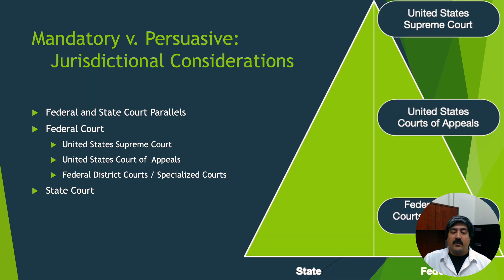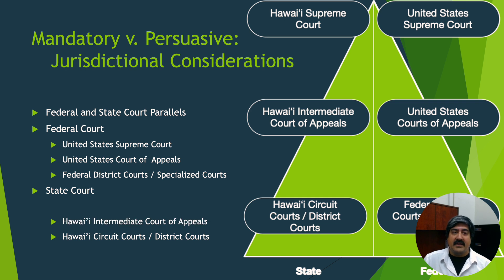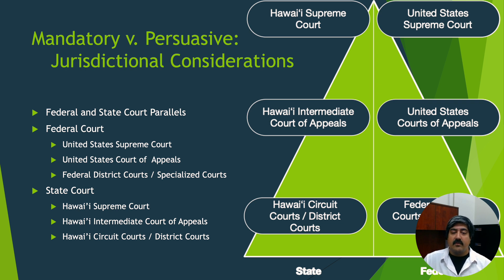As far as state courts go, the names of the various levels may differ depending on the state. Here in Hawaii, state cases begin at the circuit court or district court level, then move on to the Intermediate Court of Appeals, finally reaching the highest court of our state — the Hawaii Supreme Court. If you find yourself lost, the William S. Richardson School of Law Library has a library guide that can help you determine jurisdiction.